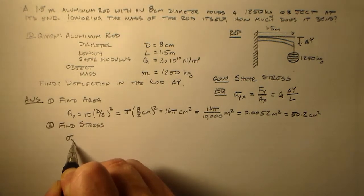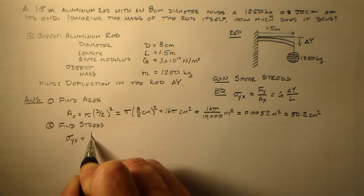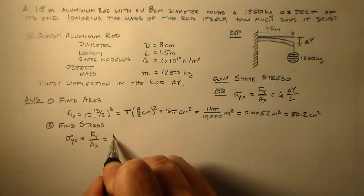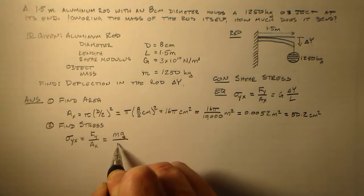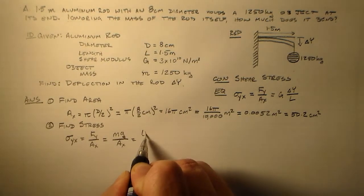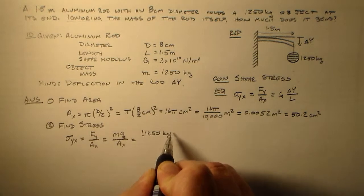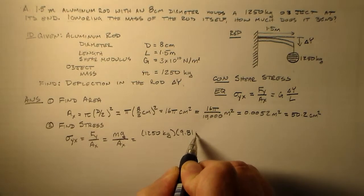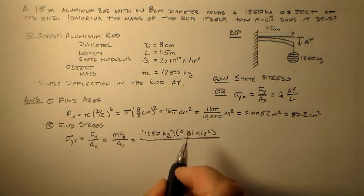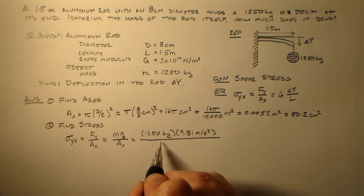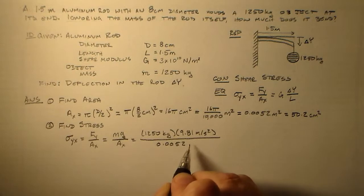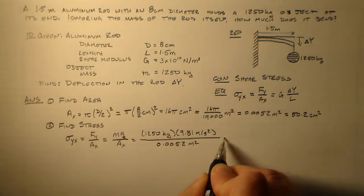Okay. So I want to find my stress, like I said. And I said that I had an F_y over an A_x. My F_y is mg and my A_x I already found, so I'll just leave it. So that means mg is 1250 kilograms. g is usually 9.81 meters per second squared, as long as we're on Earth. And then I want to pop in this A_x. I just spent all that time finding up there, 0.0052 square meters. Okay.